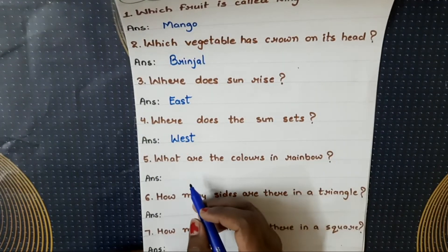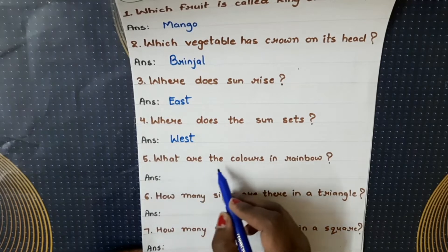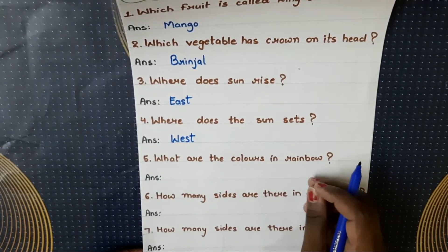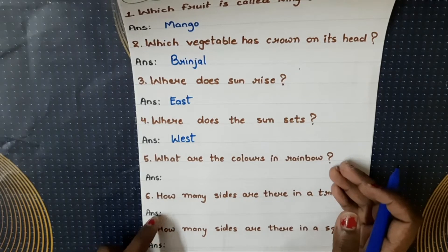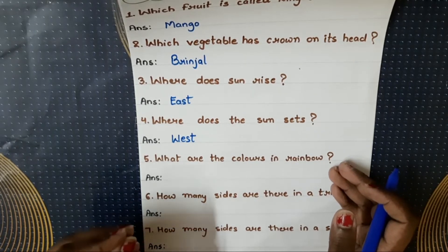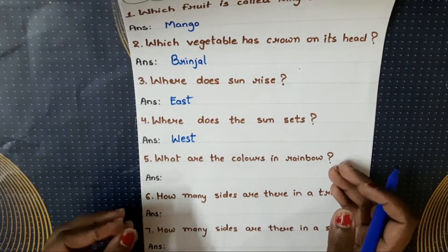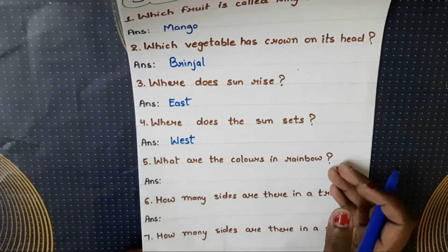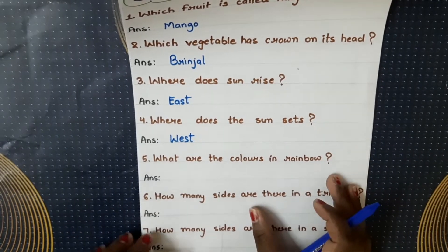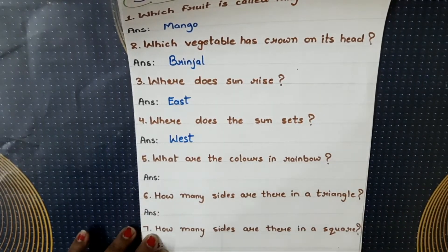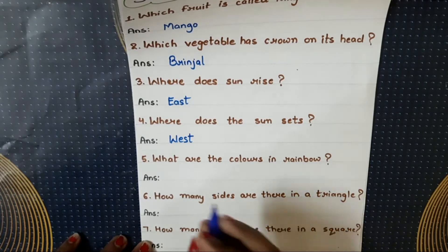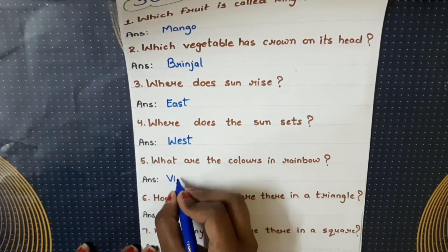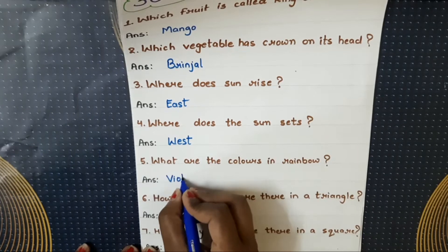Next question: what are the colors in a rainbow? Rainbow mein kaunse colors hote hain? You need to know that in a rainbow there are seven colors. Rainbow mein total seven colors hote hain. And they are violet,